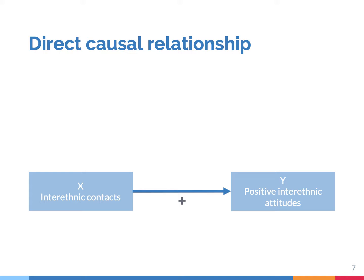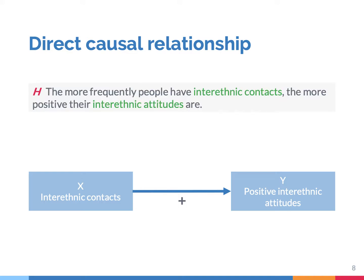If the minus symbol had been used instead, it would mean that more frequent interethnic contacts decrease positive interethnic attitudes. But that's not what the theory says. What we have visualized using the conceptual model is the idea that the more frequently people have interethnic contacts, the more positive their interethnic attitudes are. In this case, it's what we call a direct causal relationship, meaning that changes in X have a direct effect on changes in Y.